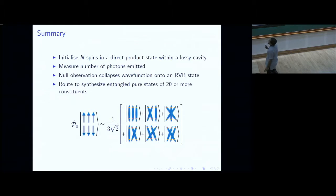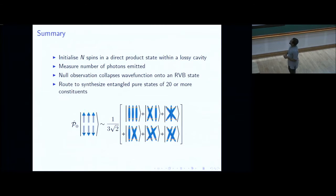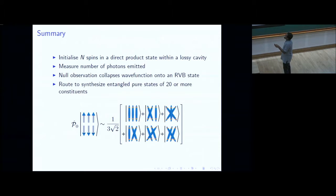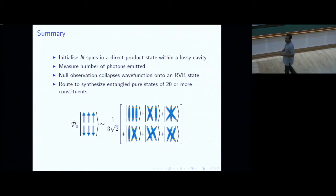Summary so far: initialize N spins in a lossy cavity in a direct product state, measure the number of photons emitted. If the measurement gives zero — null observation — you collapse the wave function into an RVB state. This is a route to synthesize entangled pure states of 20 or more constituents. Note that the collapsed state is a pure state, not a density matrix.